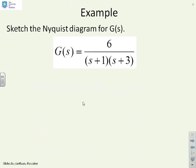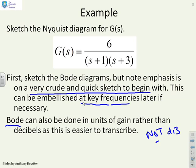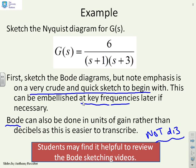Here's an example: sketch the Nyquist diagram for this G(s) using the technique we've just suggested. First, we're going to sketch the Bode diagrams, with emphasis on a very crude and quick sketch. We can embellish this slightly at key frequencies if we need specific information. Note I'm going to cheat a bit — my Bode gain diagram will be done in units of gain, not decibels, because converting to decibels and back again is just wasting time. If you haven't been through the Bode videos on sketching, you may find those helpful before following the next part.